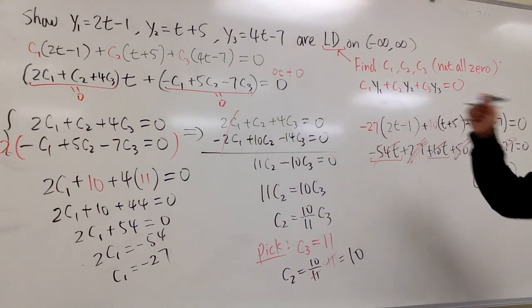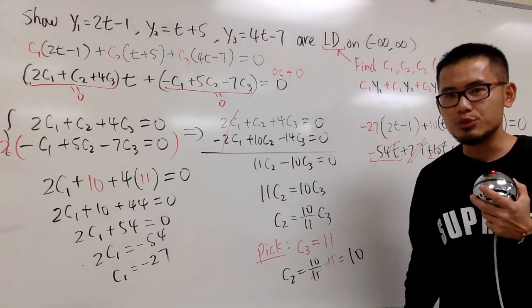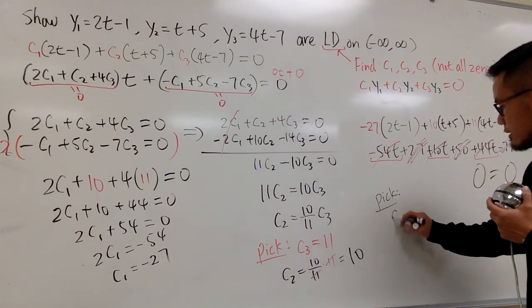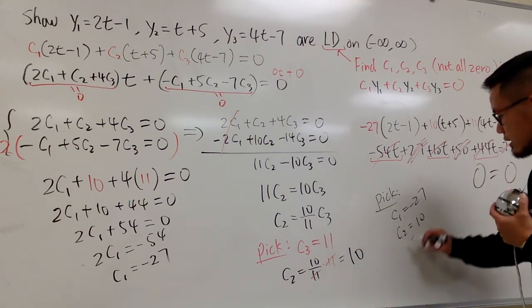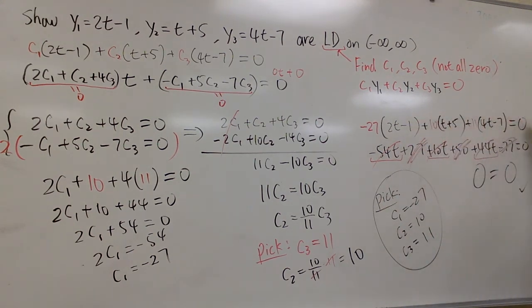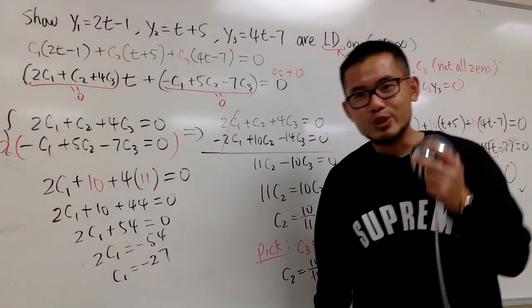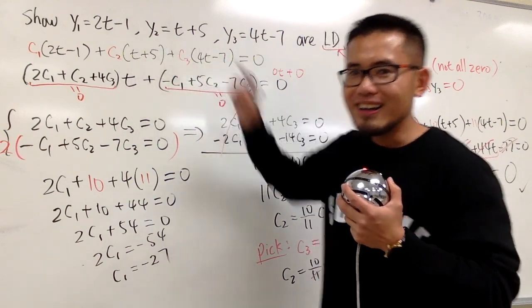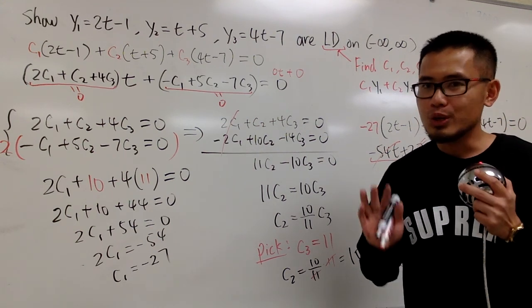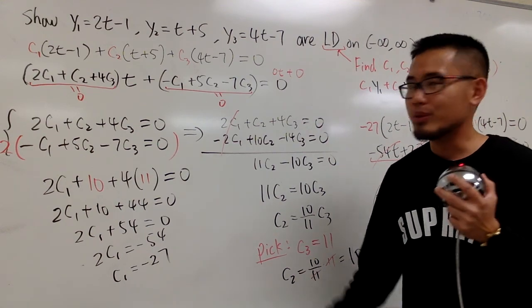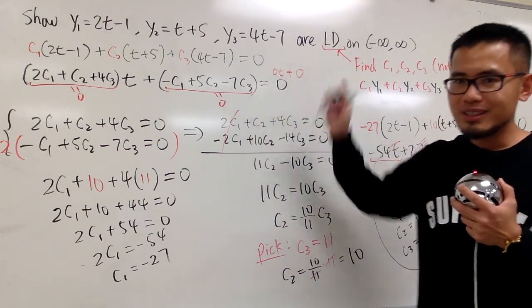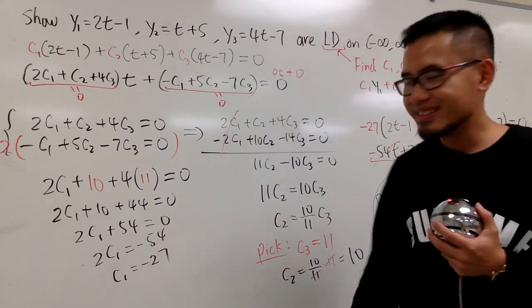So here's the deal. As long as you can find out one set of values for c1, c2, c3, you can just say, we can pick c1 to be negative 27, c2 to be 10, c3 to be 11. So you can just show me these c values. When you get 0 is equal to 0, guess what? You just show that these functions are linearly dependent by using the definition. Be sure you don't use, once again, be sure you don't use the Wronskian to show linearly dependency. For this case, do not use Wronskian to show LD. Only use Wronskian to show LI. And I'll demonstrate in the next video. Anyways, that's it.